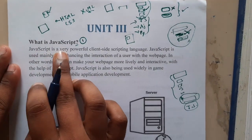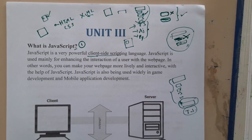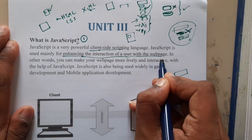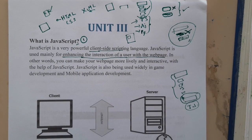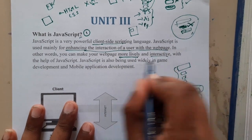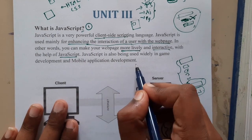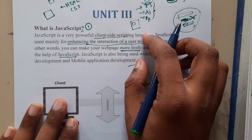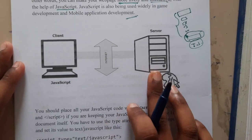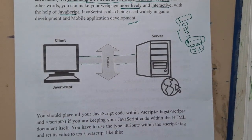JavaScript is a very powerful client-side scripting language — not server-side. Client means it belongs to the frontend. JavaScript is used mainly to enhance the interaction of the user within the web page, to make the website more live and interactive. JavaScript is also widely used in game development and mobile development. Using only JavaScript and HTML, you can even make apps nowadays.